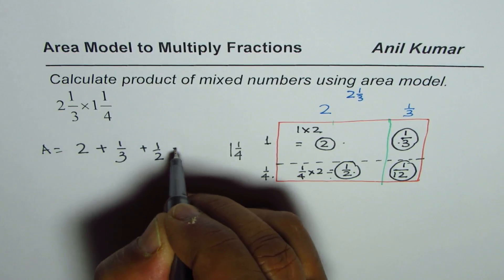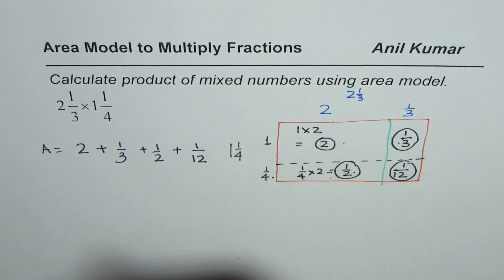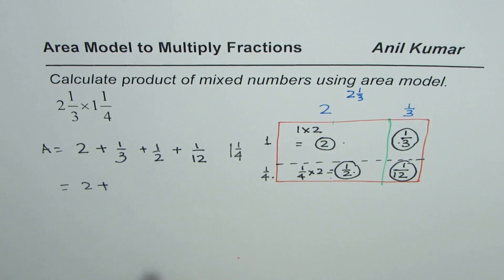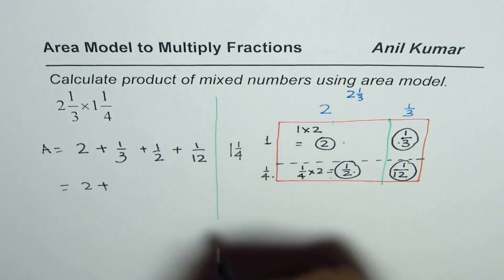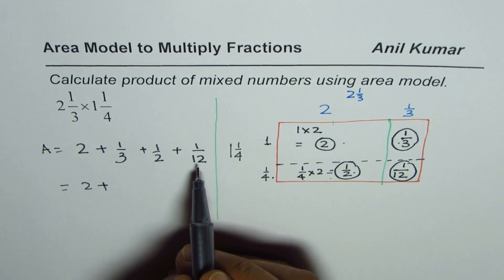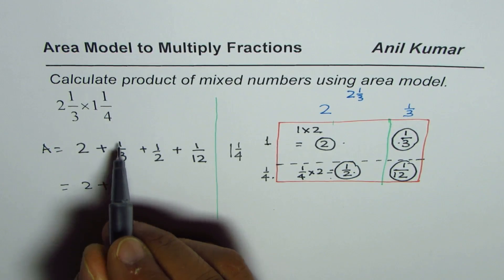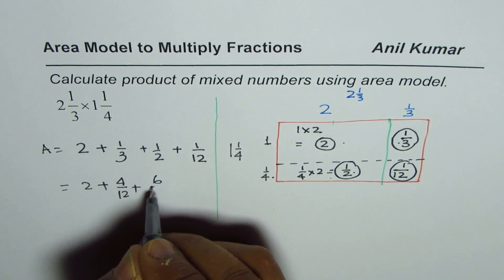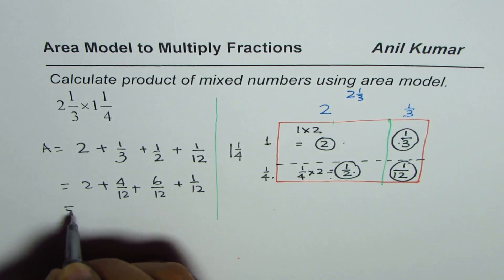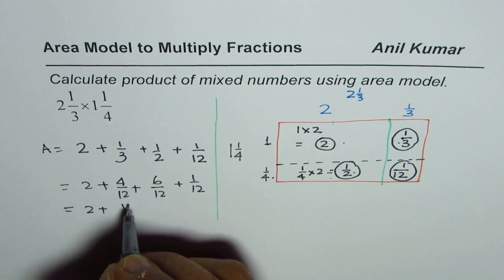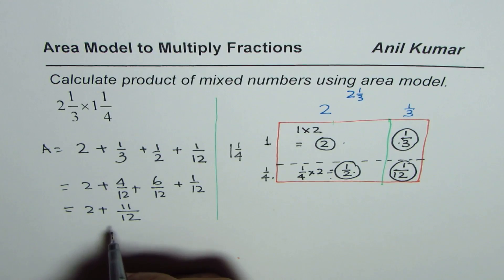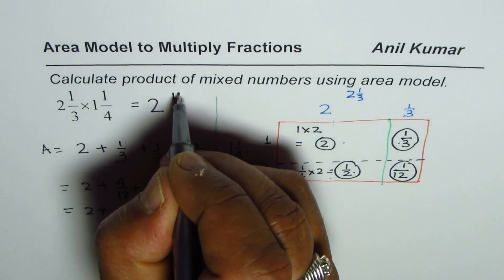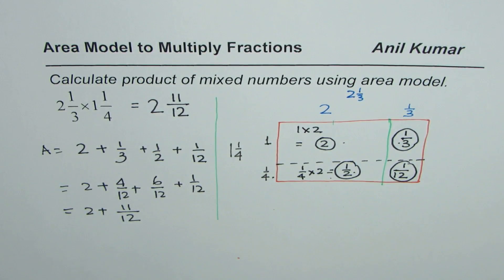Adding the areas of all four rectangles gives the total area. We get 2 plus 1/3 plus 1/2 plus 1/12. Using a common denominator of 12: 1/3 becomes 4/12, 1/2 becomes 6/12, and 1/12 stays. So 4 plus 6 plus 1 equals 11, giving us 2 and 11/12 as our answer.